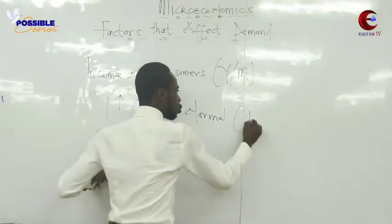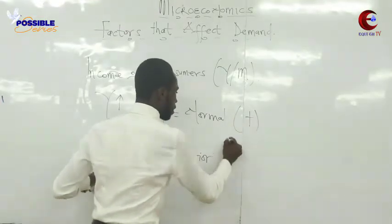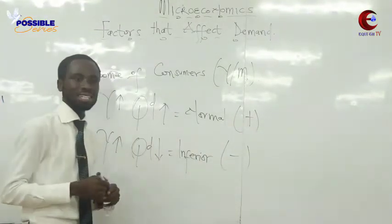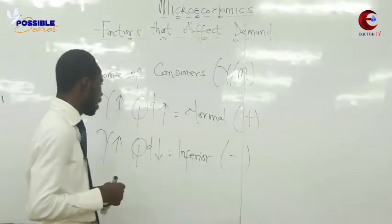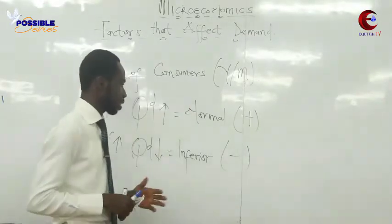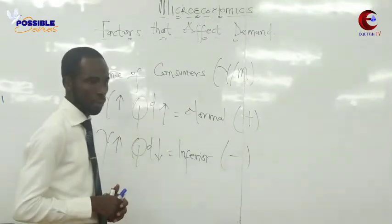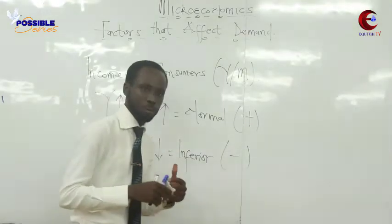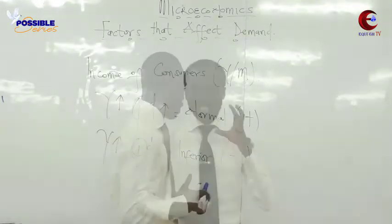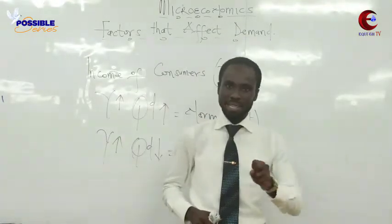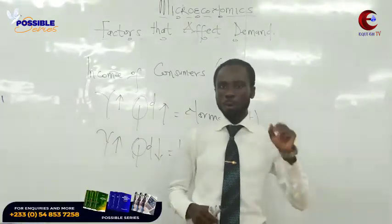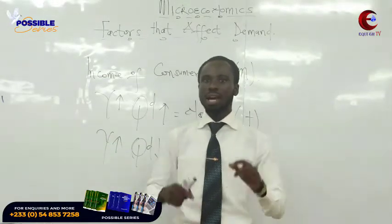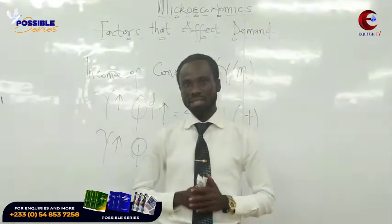Normal goods have a positive relationship between income and quantity demanded, while inferior goods have a negative relationship. Once again, my name is Possible. Possible Series is in the system — Possible Principles of Microeconomics and Communicative Studies. Make it your priority to get a copy so that you can pass your quiz and exams with ease.